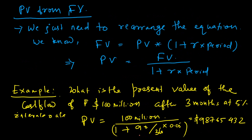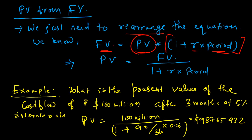Now let's learn how to calculate present value from future value. The formula we learned can simply be rearranged. Since Future Value = Present Value × (1 + rate × period), we rearrange to get: Present Value = Future Value / (1 + rate of interest × period).